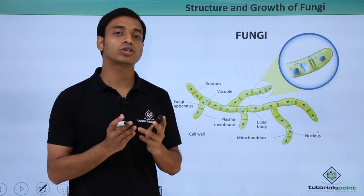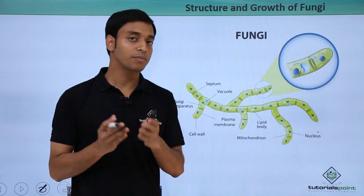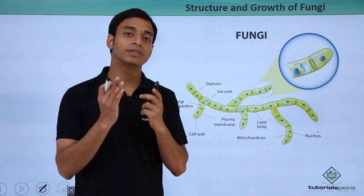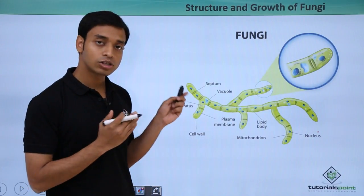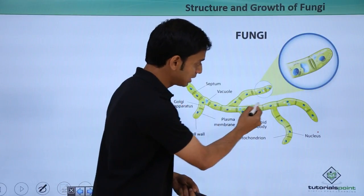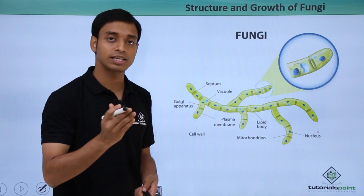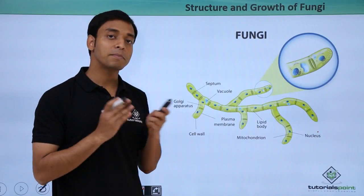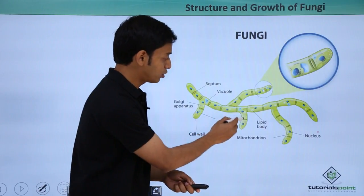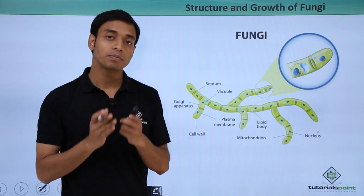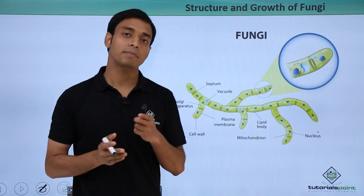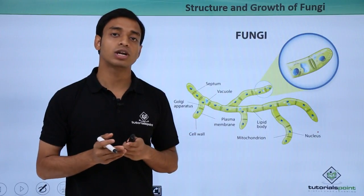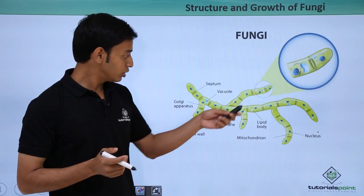Now let us look more closely at the structure of hyphae and mycelium. A single elongated filament-type structure is known as a hyphae. When these filaments are branched, as we can see here, it is referred to as mycelium. If branching were absent, these filaments would simply be called hyphae.